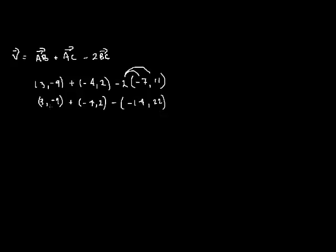And now when adding or subtracting vectors, what we do is we add or subtract the like components. So the x components with the x components and the y with the y. So we have 3 minus 4 minus minus 14. 3 minus 4 minus minus becomes plus 14, comma. And then minus 9 plus 2 minus 22. And this gives us (13, -29).